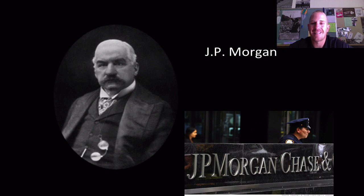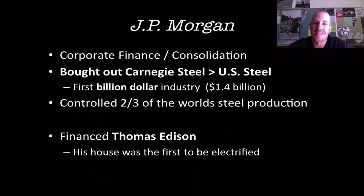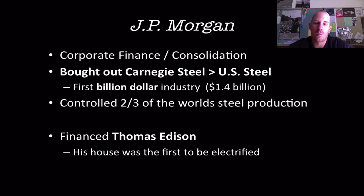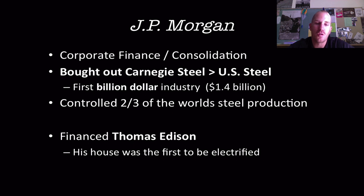J.P. Morgan is the financial backer — he is all about money. His family has been in banking for generations, and you may recognize the name from J.P. Morgan Chase Bank today. He financed figures like Thomas Edison. Corporate finance and consolidation of business is his claim to fame. When he bought Carnegie Steel and renamed it U.S. Steel, he created one of the largest companies in the world — the first billion-dollar industry — controlling over two-thirds of the world's steel production. Through his holding companies he financed Thomas Edison, and J.P. Morgan's house was the first house ever to be electrified, really beginning the era of electricity in people's homes.